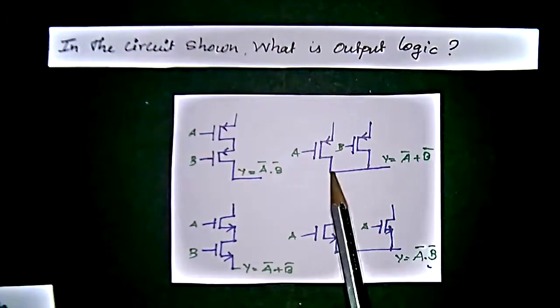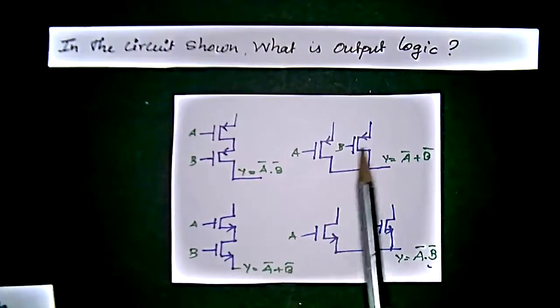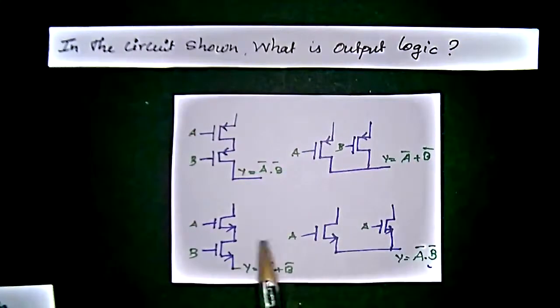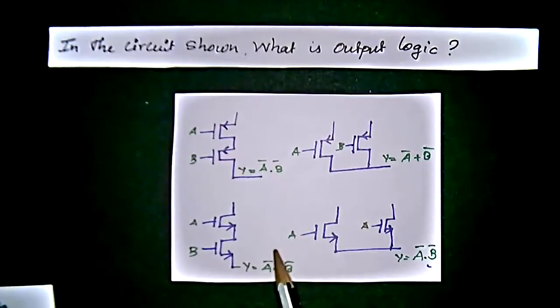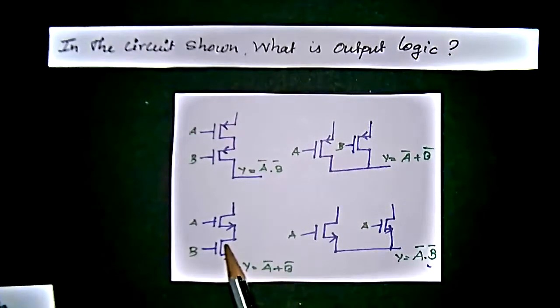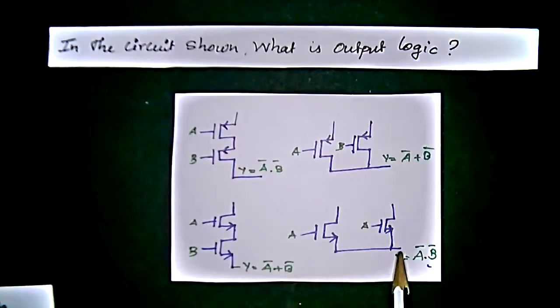But in parallel mode, it will get the addition. If one circuit is shorted, another one will be acted here, it's opposite to that. If we have the Y value, that will be in common to A bar plus B bar. It will be Y equal to A into B bar.